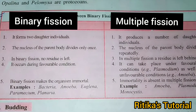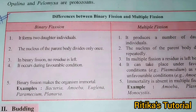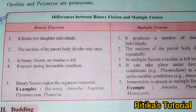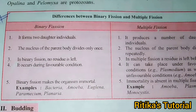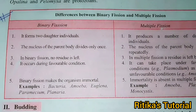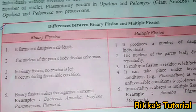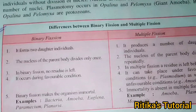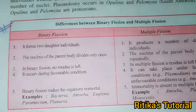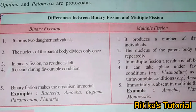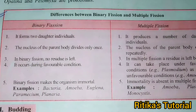In this video I will be discussing the difference between binary fission and multiple fission. Firstly, binary fission: fission means splitting. In binary fission, it forms two daughter individuals when the parent body breaks apart. The parent body divides into two equal daughter individuals.